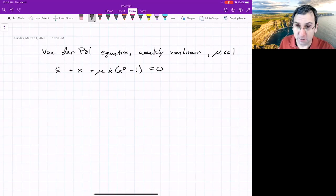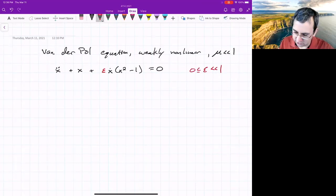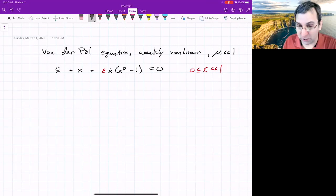It's customary when you've got something that's small to use the parameter epsilon instead of mu. So epsilon is something that's small but greater than or equal to zero. In this weakly nonlinear case, you think things will look a lot like they do when epsilon is zero, with some order epsilon modifications.